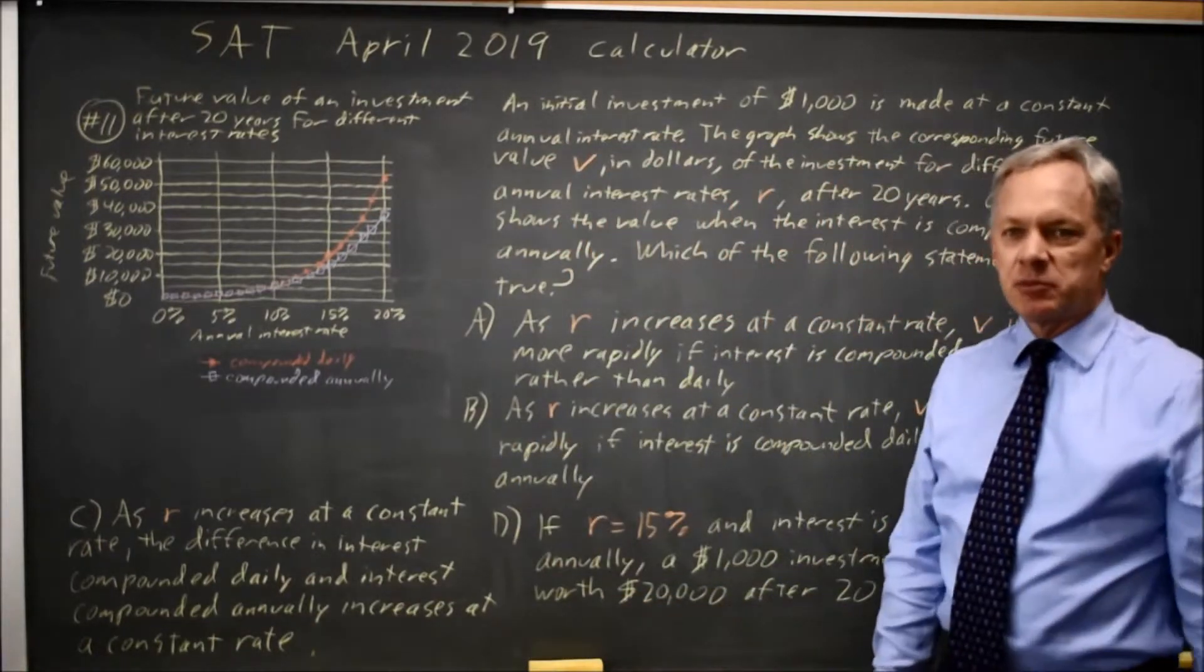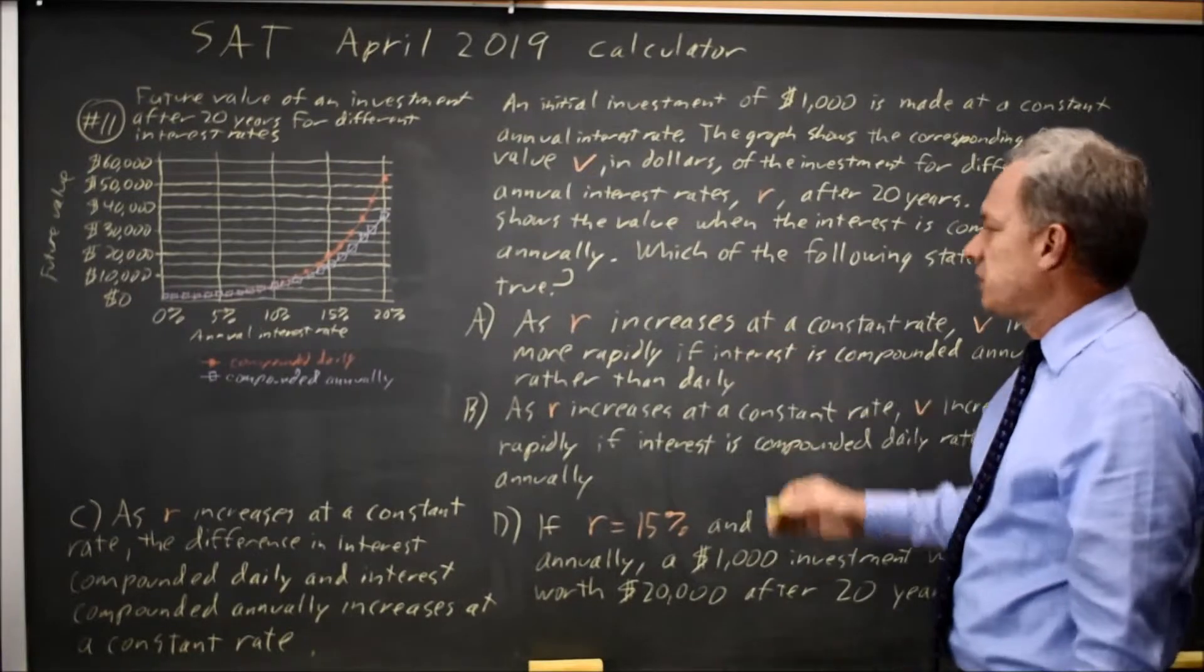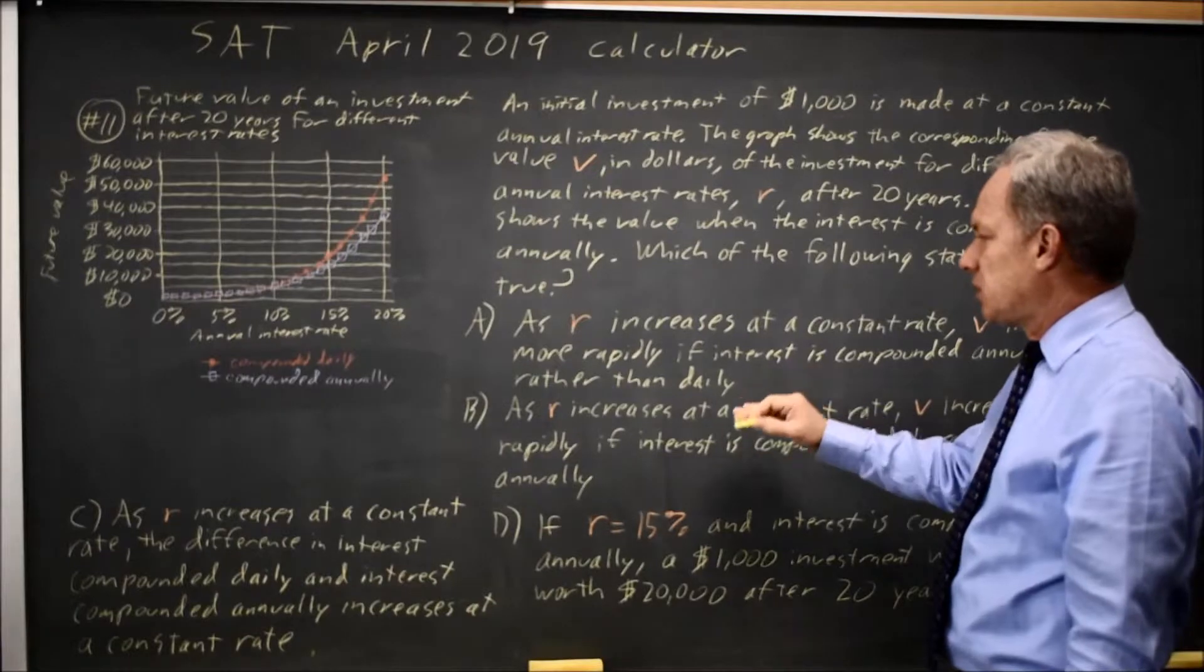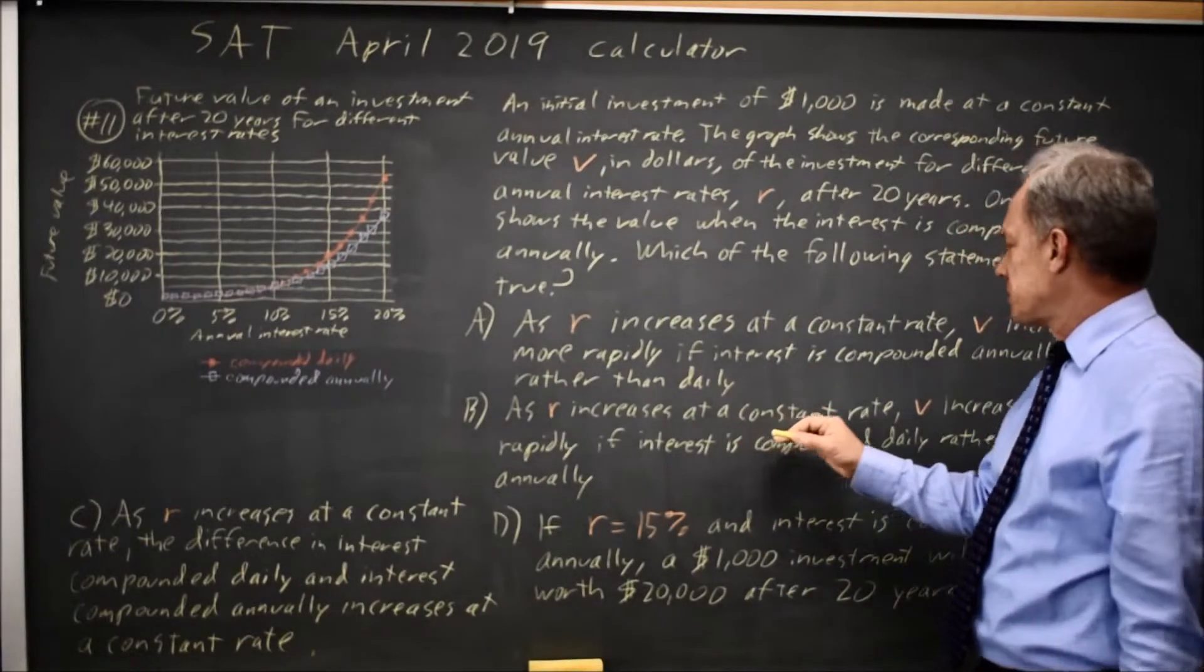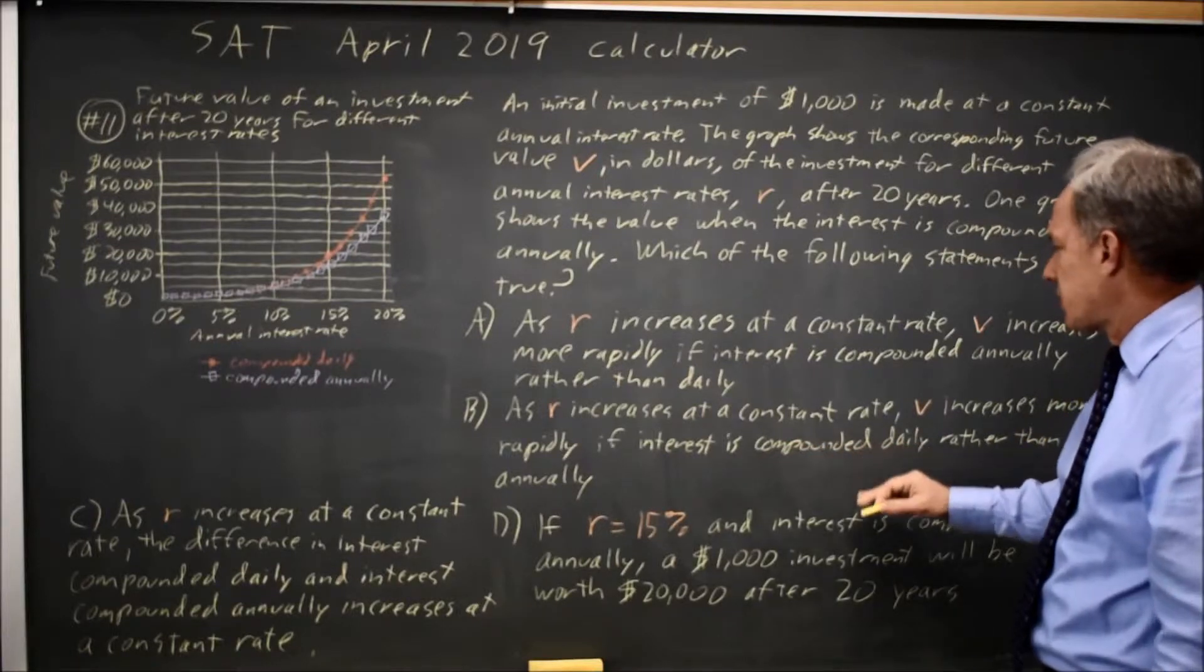They ask which of these statements is true. A says as R increases at a constant rate, V increases more rapidly if interest is compounded annually rather than daily. B is the reverse: as R increases at a constant rate, V increases more rapidly if interest is compounded daily rather than annually.